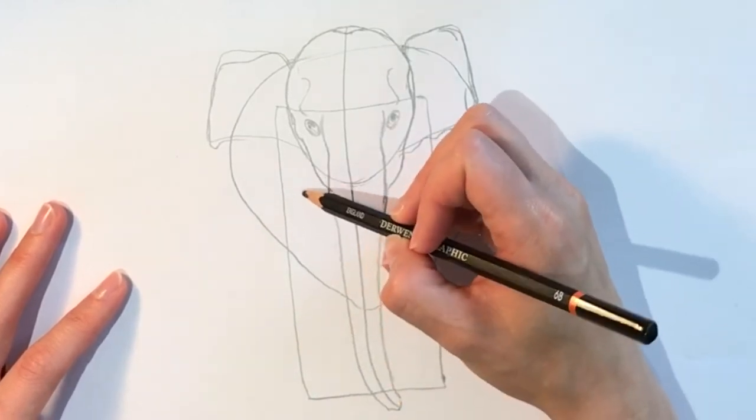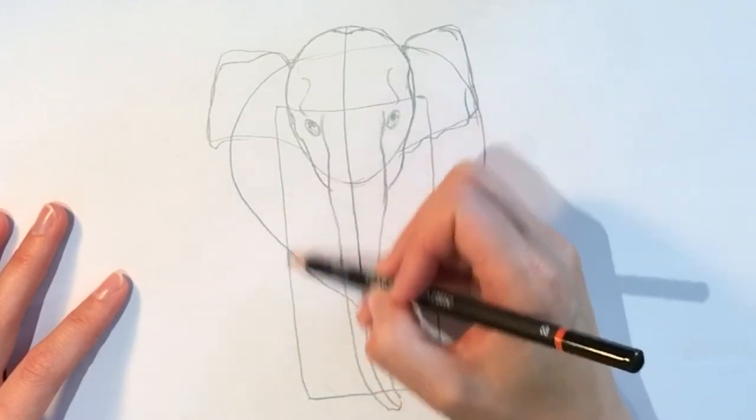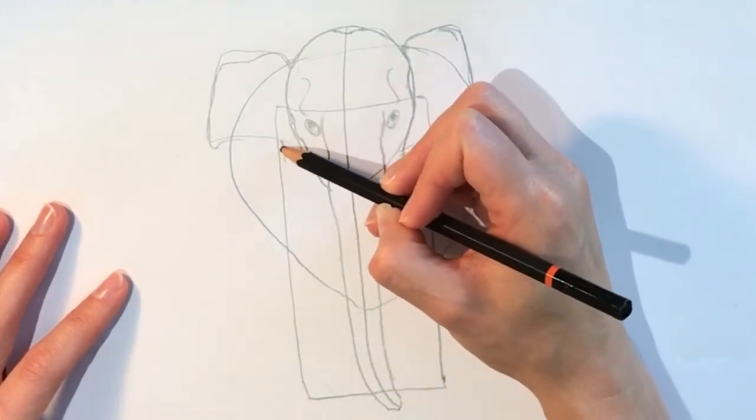And then we're going to do the front leg. So where you see this rectangle shape, that's going to show you where the front legs are going to go. So at the top, just follow it down.